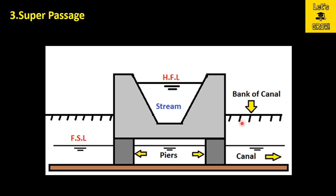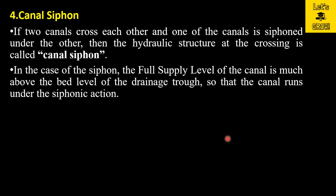This structure is suitable when the bed level of the drainage is above the full supply level of the canal, so that canal water passes clearly below the drainage. These structures are provided when the full supply level of the canal is below the stream level.